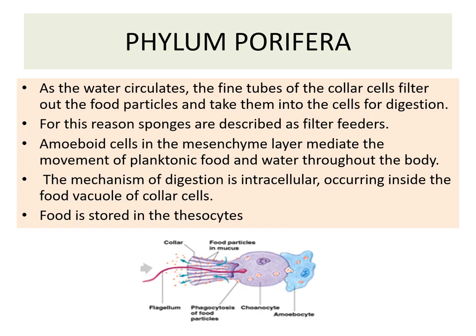For this reason, the sponges are described as filter feeders. The amoeboid cells in the mesenchyme layer mediate the movement of planktonic food and water throughout the body. The mechanism of digestion is intracellular, occurring inside the food vacuole of the collar cells. The food is stored in specialized cells known as thesocytes.